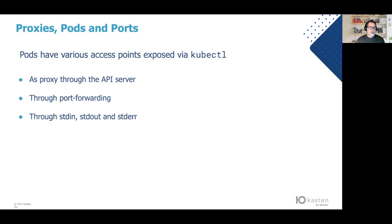Pods have various access points using kubectl. They can be accessed through the API server. I'll be talking about methods of doing that, about using port forwarding to access pod ports directly, and about the standard streams — standard in, standard out, and standard error. I'll be talking a little bit about logs as well, just for complete coverage.